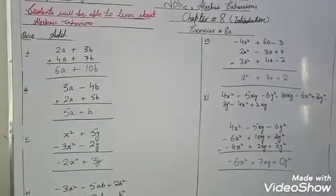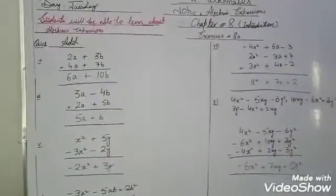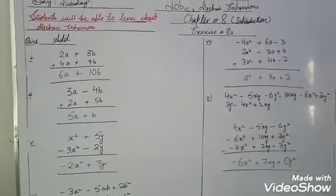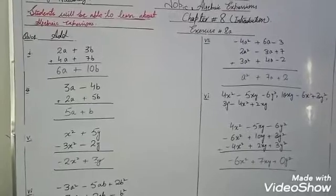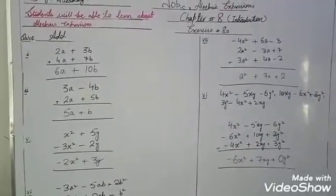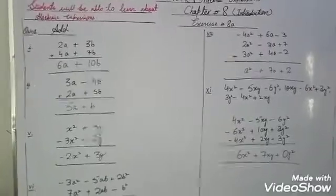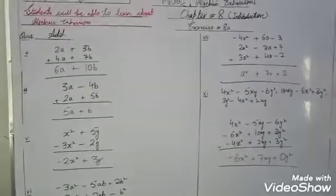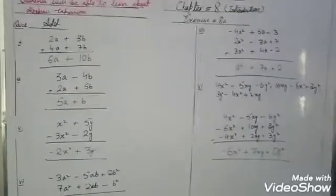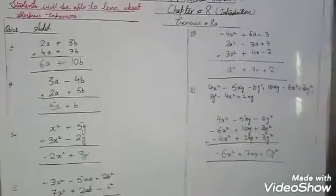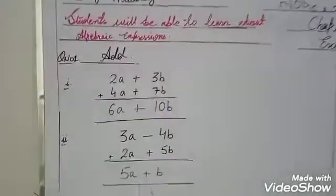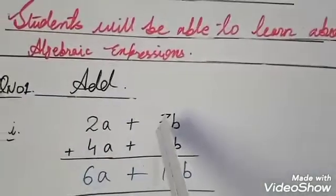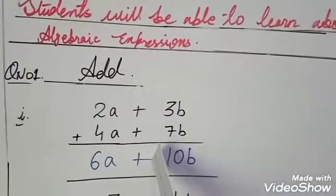Exercise 8a, question number 1, part (a). The first algebraic expression is 2a plus 3b, and the second algebraic expression is 4a plus 7b. We need to add these two algebraic expressions. We add like terms: 2a plus 4a — 2 is the coefficient and a is the variable, 4 is the coefficient and a is the variable. So 2a plus 4a equals 6a.